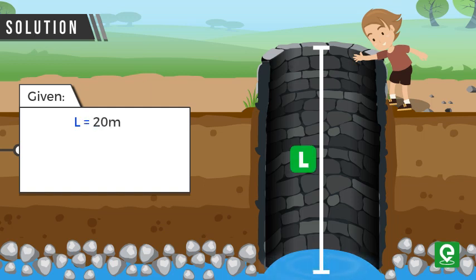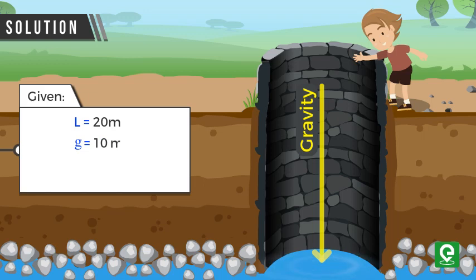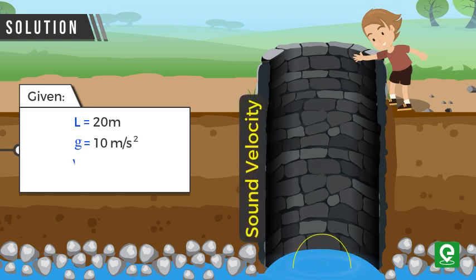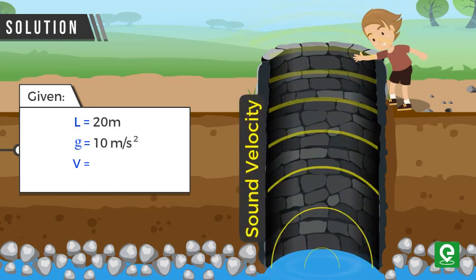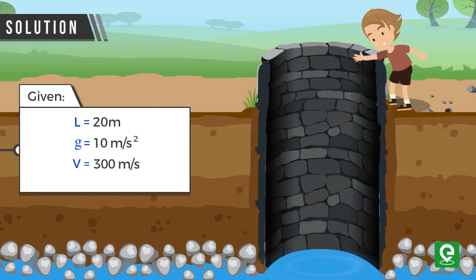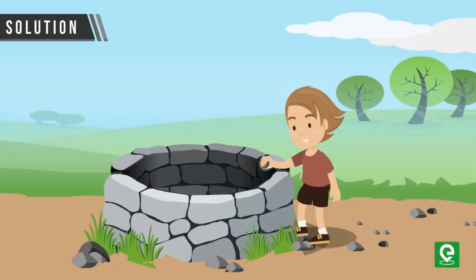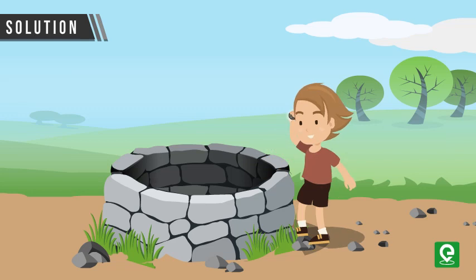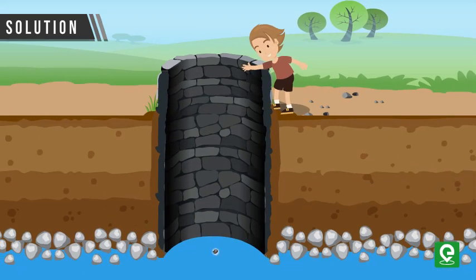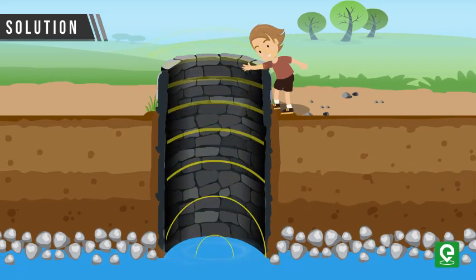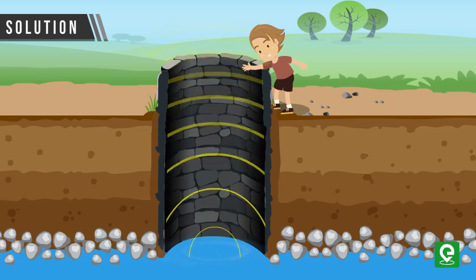Solution: We are given depth of well equal to 20 meters, acceleration due to gravity equal to 10 meter per second squared, velocity of sound equals 300 meters per second, error in time ΔT equal to 0.01 seconds. In this question, the person is standing near the well and drops a stone, and after some time he hears the sound of splash.